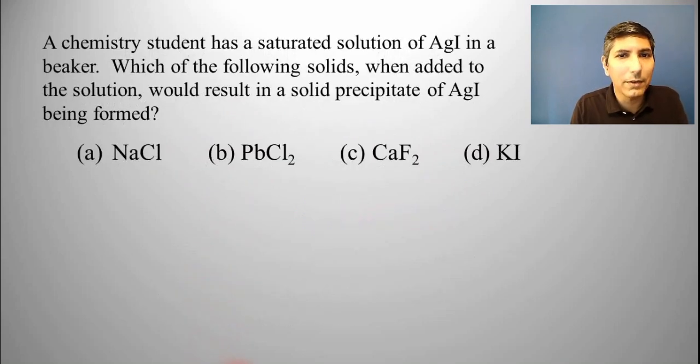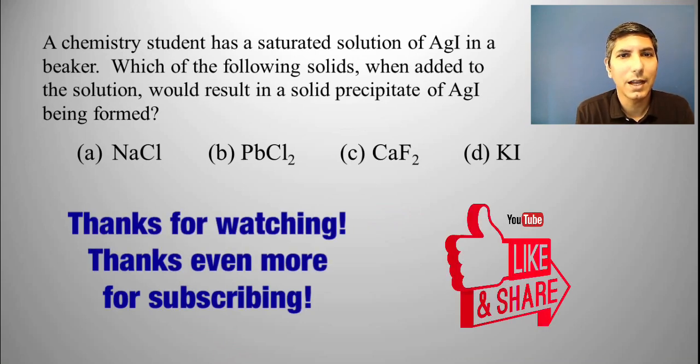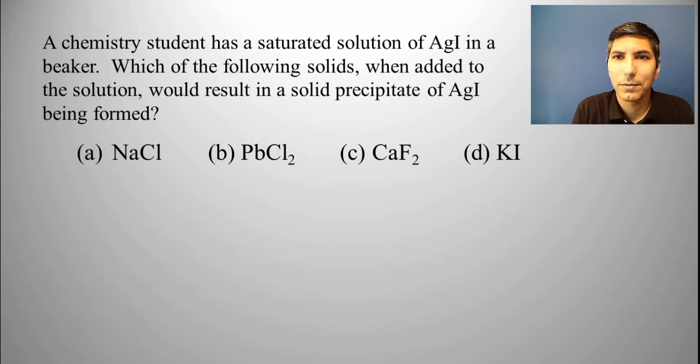Now, here we have a couple questions. A chemistry student has a saturated solution of silver iodide in a beaker. Which of the following solids, when added to the solution, would result in a solid precipitate of silver iodide being formed? Well, we have to remember, just like in that last example, if there's a saturated solution of silver iodide, it's at equilibrium, isn't it?